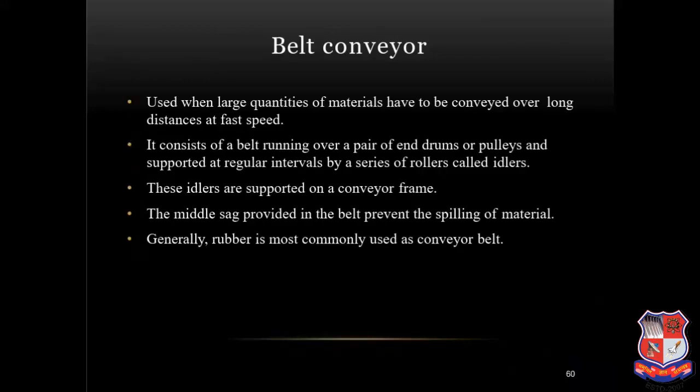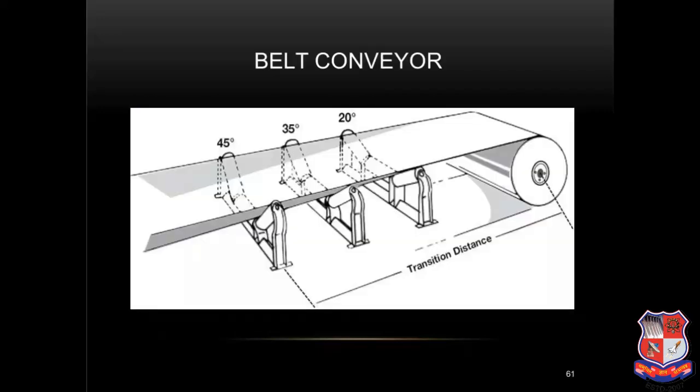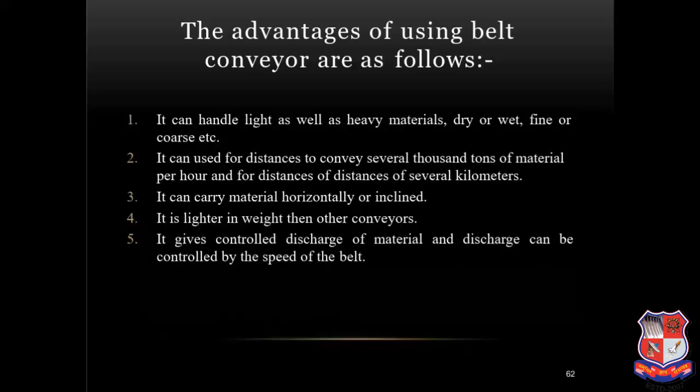Belt conveyor: used when large quantities of material have to be conveyed over a long distance as fast as possible. Each consists of a belt running over a pair of end drums or pulleys, supported at regular intervals by a series of rollers called idlers. The idlers are supported on a conveyor frame. The middle sag provided in the belt prevents the slipping of material. Rubber is most commonly used as a conveyor belt. Advantages: it can handle light as well as heavy material, dry or wet, fine or coarse. It can convey several thousand tons of material per hour and for distances of several kilometers. It can carry material horizontally or inclined. It gives controlled discharge of material regulated by the speed of the belt.